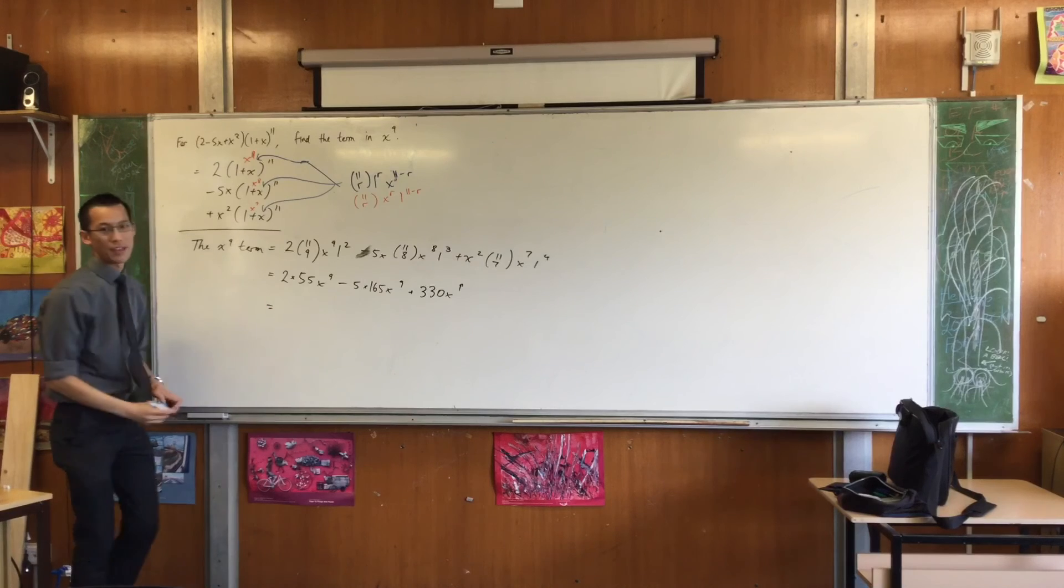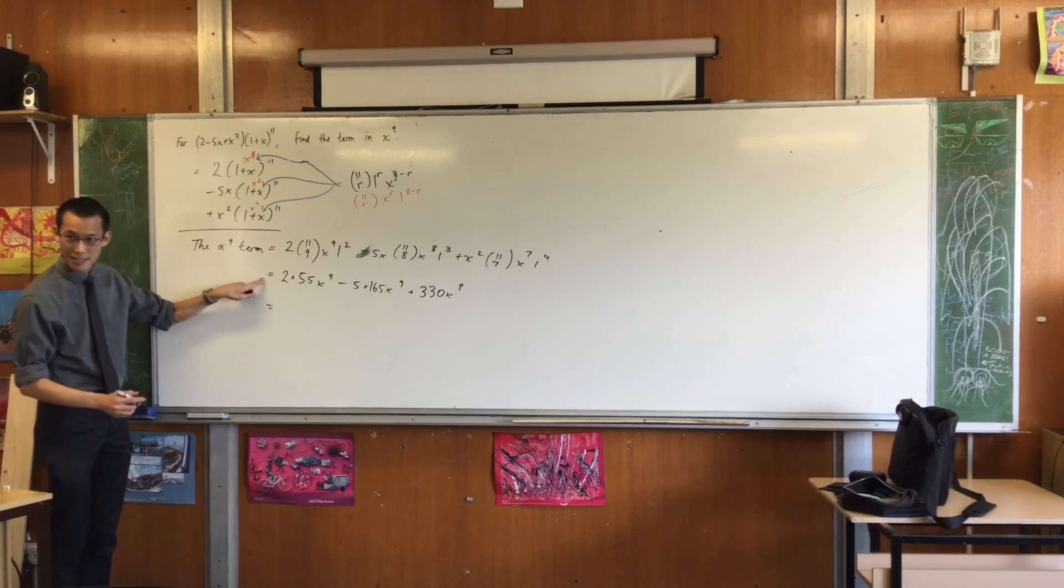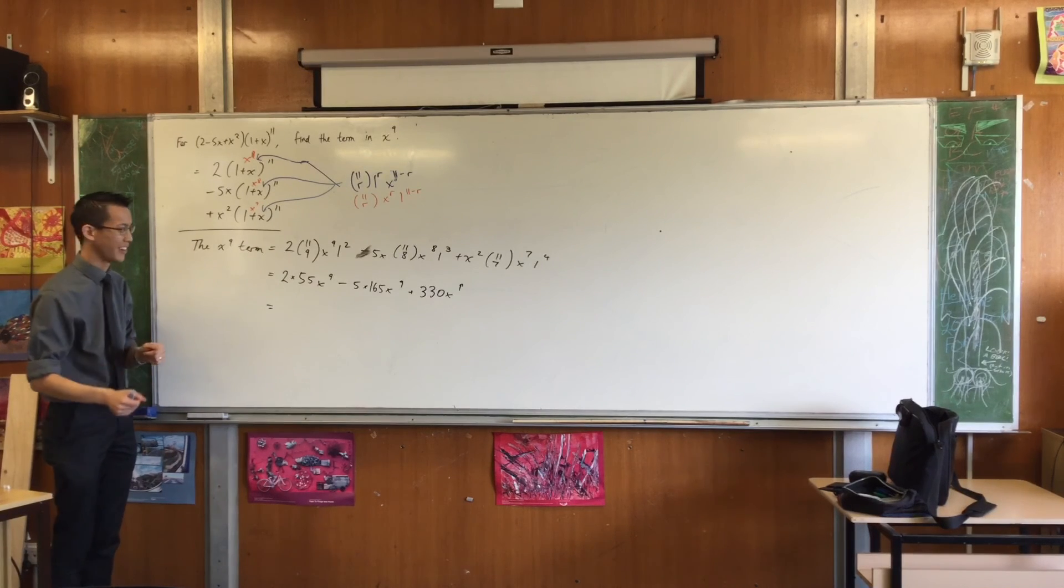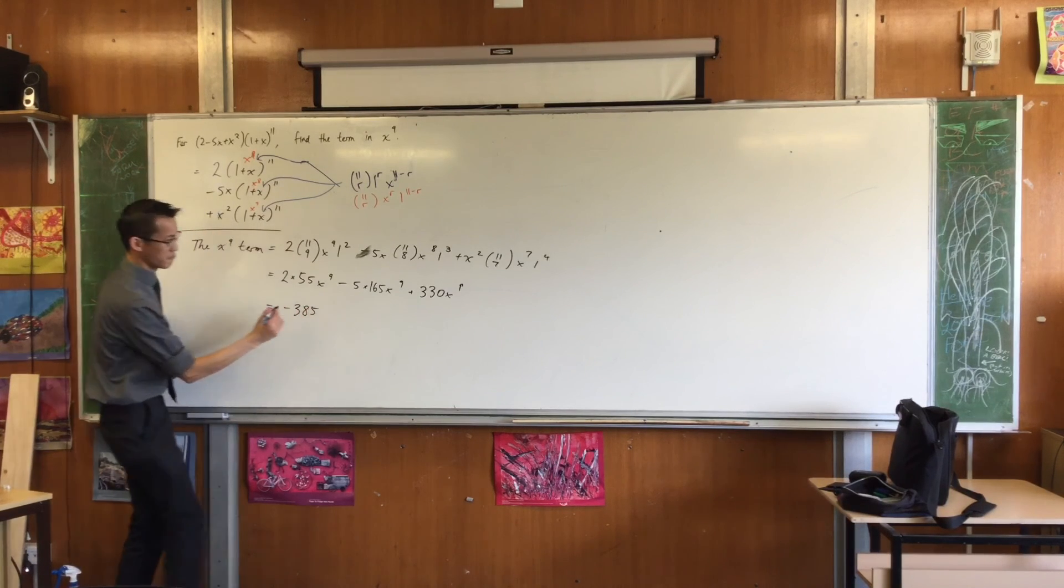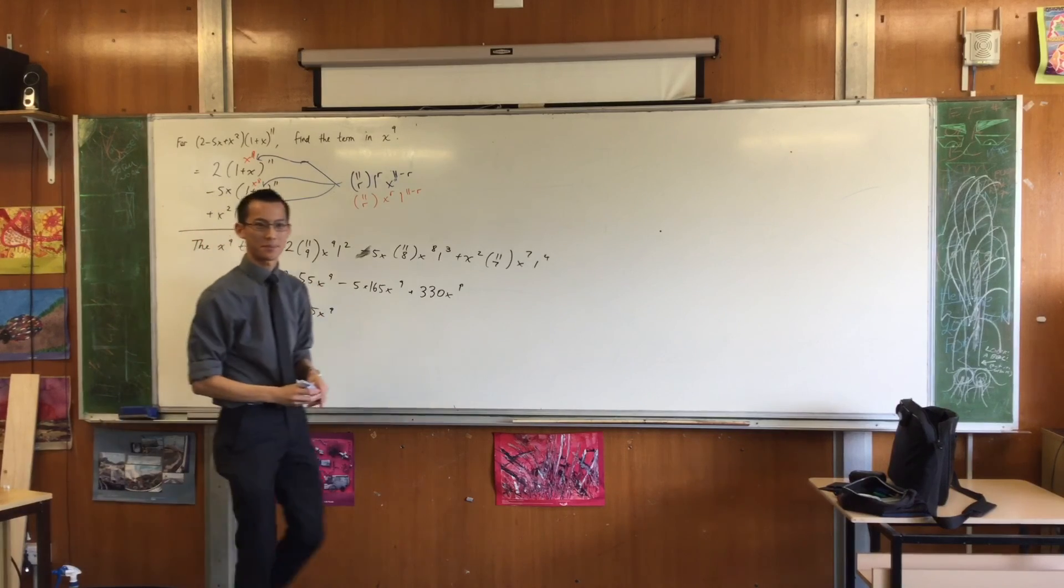And then I would write the final line. And the reason why is because this line is important. This line matters to me. It shows me you can understand what's going on and not just push buttons. Okay. So now you can tell me the answer, which is? 135. Excellent. That's the x to the 9 term. Okay.